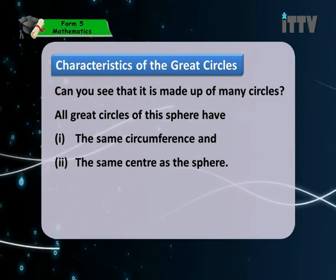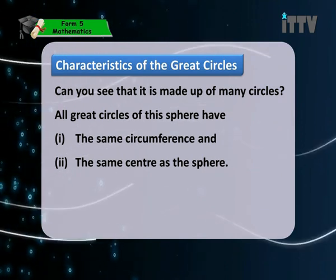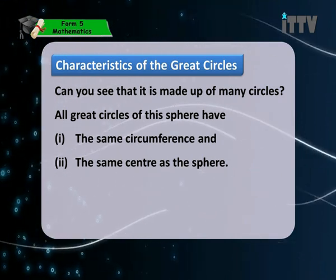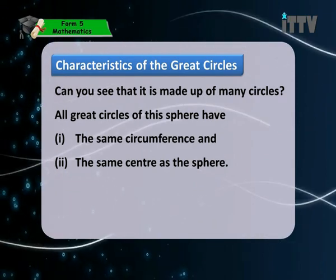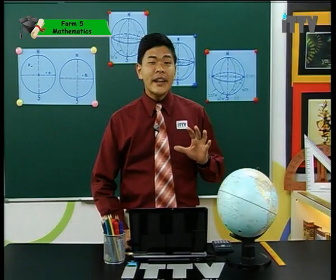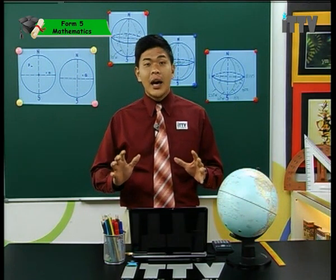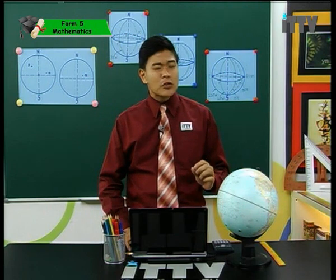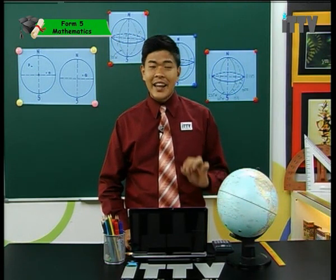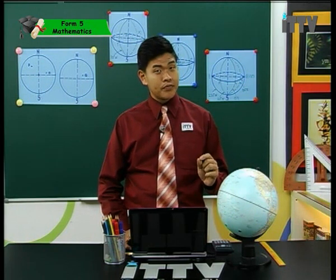All great circles of a sphere have firstly the same circumference, and secondly the same center as the sphere. Just remember: a great circle has the same center as the center of the earth, and is the largest circle that can be drawn on the earth's surface.